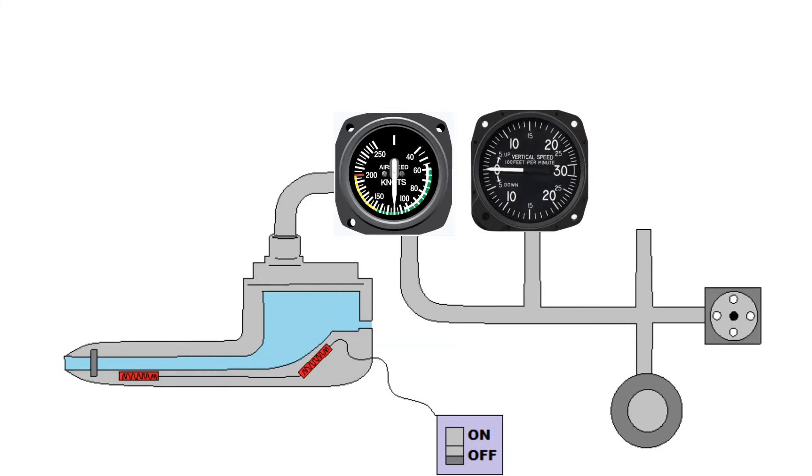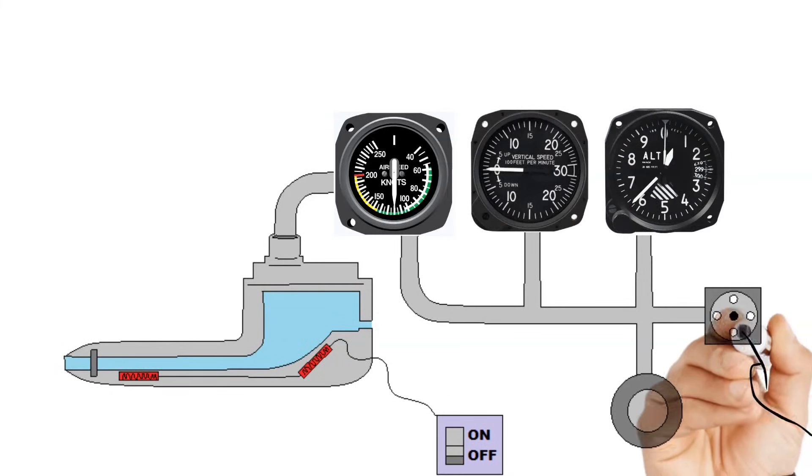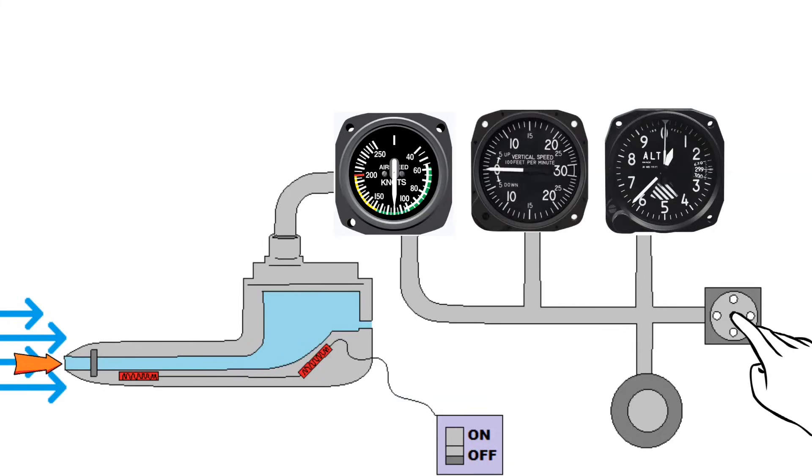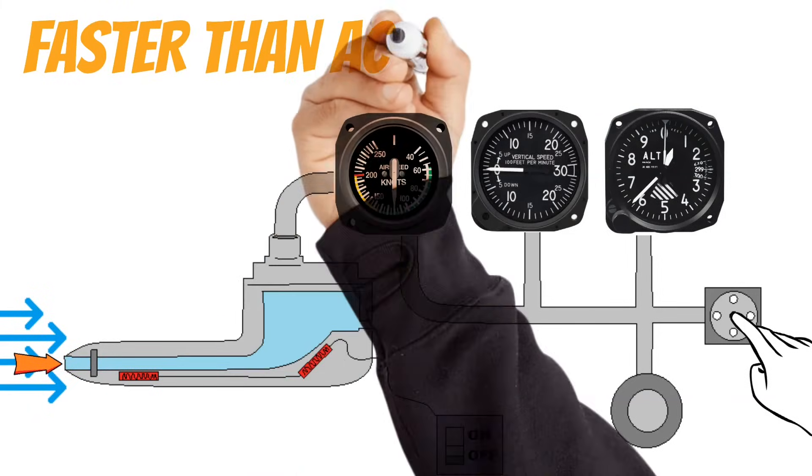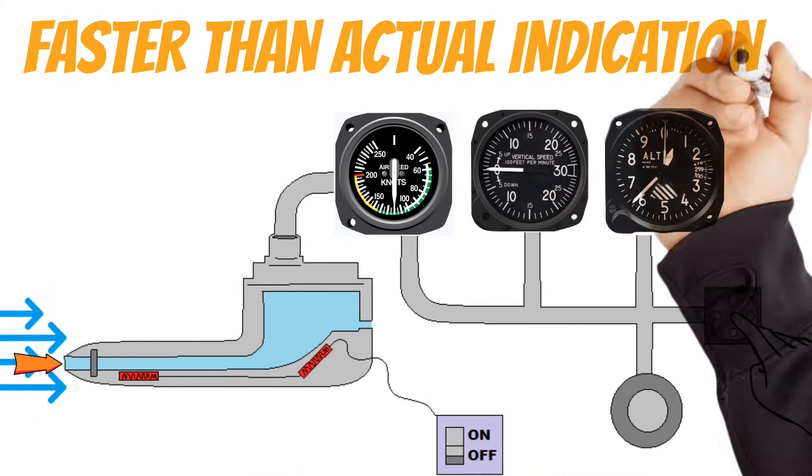The third thing that could possibly happen is only the static port gets clogged. If this happens, the pitot tube is still taking in the dynamic and the static pressure from the front of the pitot tube. But the static port is unable to offset that static air that's also coming in the front. And this means that your airspeed indicator is going to give you faster airspeeds than what you're actually going.